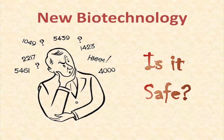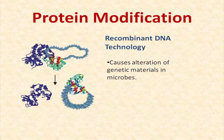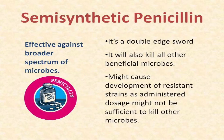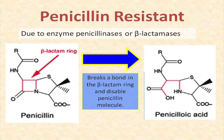New biotechnology — is it safe? Protein modification caused by recombinant DNA alters enzymatic materials in microbes, as shown in the diagram. Semi-synthetic penicillin, as claimed by producers, is effective against a broader spectrum of microbes. However, this is a double-edged sword — although it may be used for various infections, it might also kill beneficial microbes harbored in our body. Penicillin-resistant strains may emerge if the administered dosage is not sufficient to kill all disease-causing microbes.